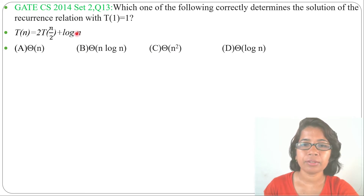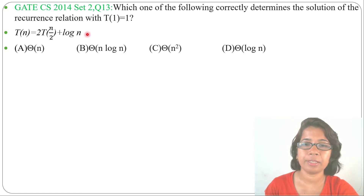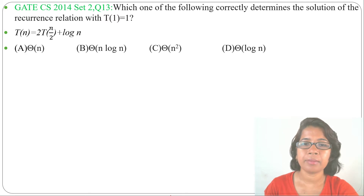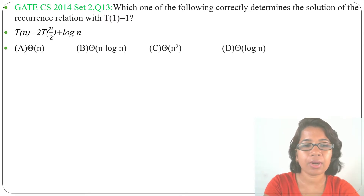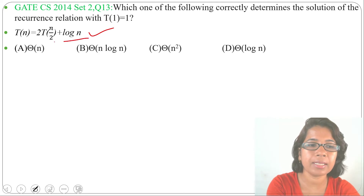There are three methods for solving a recurrence relation: back substitution method, recursion tree method, and master theorem method. I already discussed these three methods — just go through the lecture. I will solve this question using the master theorem.